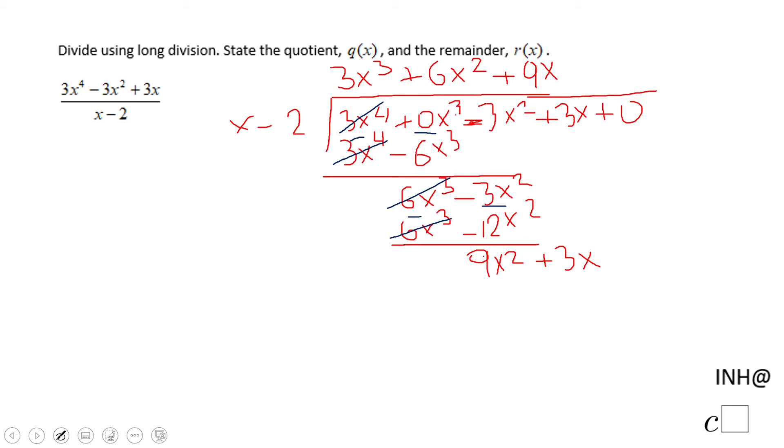9x times x, 9x². 9x times negative 2, negative 18x. The next step is subtraction. If you said so in your mind, that's great. 9x² can cancel out, and we have positive 3x minus negative 18x—that is 21x plus 0. Don't forget about that 0, very important.